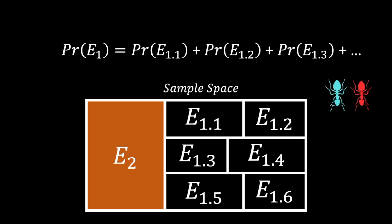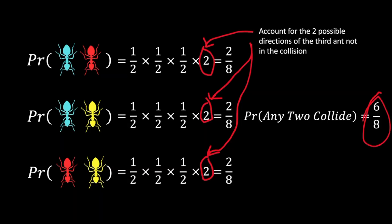In our case, we can consider the event of any two collisions being the red and blue ant colliding, the blue and yellow, and so on. This method is not wrong, as shown here, but it becomes prohibitively tedious as the dimensions of the problem grow.